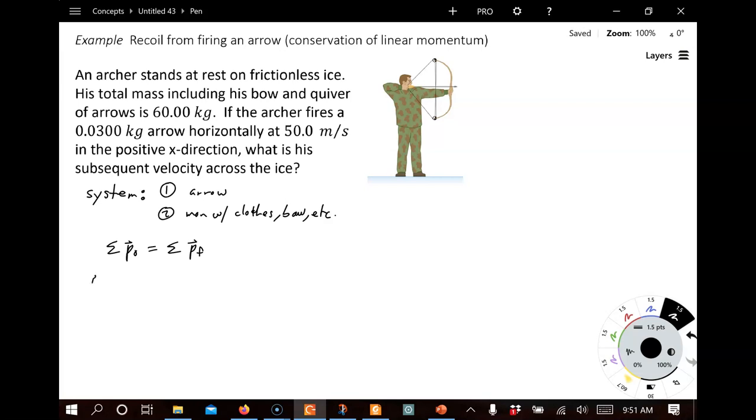We've got two objects, so we've got a P for the man. Well, I guess we'll start with the arrow. The arrow, I'm going to call this P arrow initial. Notice we have some subscripts here. P man initial, equals the sum of the same two linear momenta after the arrow is fired, final. And, of course, one more step. We know the equation for momentum is M times V. So, for the arrow, we get the mass of the arrow times the velocity of the arrow initial.